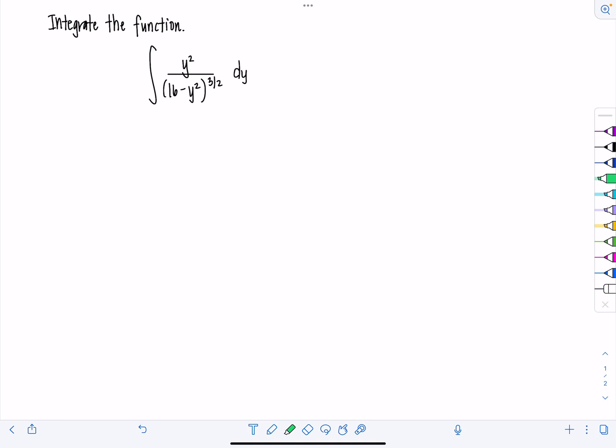You may not notice it at first glance, but this is a perfect time to use a trig sub because we have an expression that matches the form a squared minus your variable squared, which in this case is y squared. Be on the lookout for that. Usually it's underneath a radical, but in this case, same thing, because raising something to the three halves power is taking the square root of some expression and then cubing it. So perfect time for that trig sub.